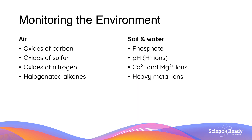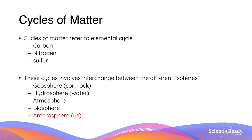The main points for monitoring the environment include: in the air, we want to monitor the oxides of carbon, sulfur, and nitrogen as part of the natural elemental cycles of Earth, and also halogenated alkanes which may cause issues such as ozone depletion. In the soil and water, we monitor phosphate levels, pH, the softness or hardness of water contributed to by calcium and magnesium ions, and also heavy metals in the water.